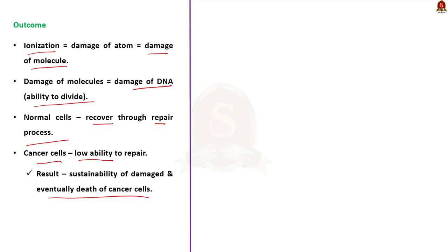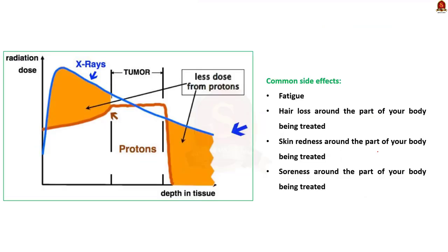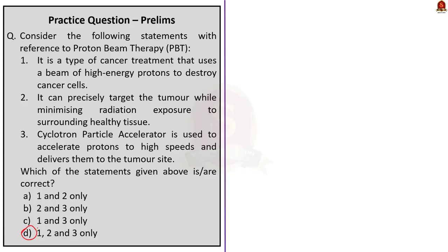The major benefit of proton therapy over X-rays is reduced exposure of healthy tissue to radiation. With X-ray therapy, the initial dosage is high and affects healthy cells before the tumor, and some radiation also affects healthy cells after the tumor. With proton therapy, the initial dosage is not high and the entire energy is released only in the tumor area, not penetrating beyond the cancerous cells. A graph shows the brown line (proton dosage) falling sharply beyond the tumor area, while the blue line (X-ray dosage) extends beyond it. Common side effects of proton therapy include fatigue, hair loss, skin redness, and soreness around the treated area.